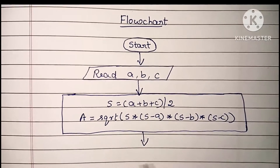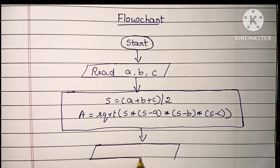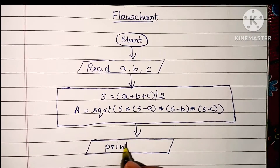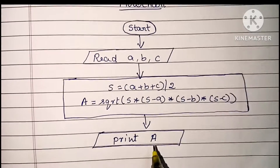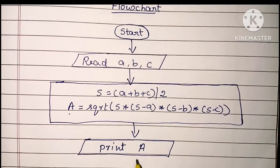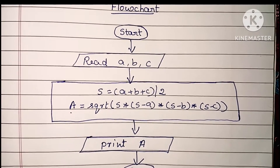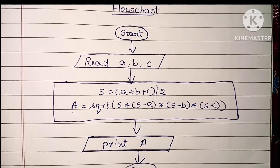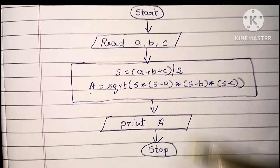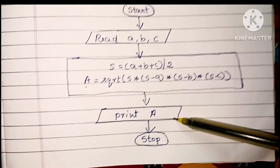Next we have to print the output value. The output value is written within a parallelogram shape, so here we draw a parallelogram and within that we print A, where A stores the area of the triangle. Next, stop the flowchart using the stop statement. The stop statement is always written within an oval shape. Start and stop statements are always written within an oval shape; input and output values are always written within a parallelogram shape.